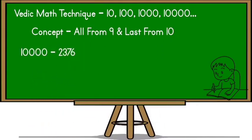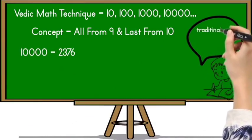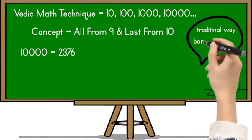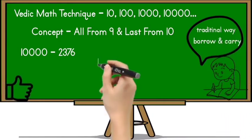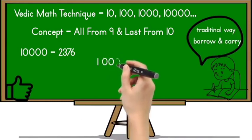For example, 10000 minus 2376. You know how to solve this example by traditional way. You have to take borrow and carry. But by using Vedic math concept it is much easier than traditional way.